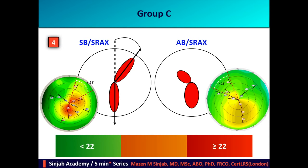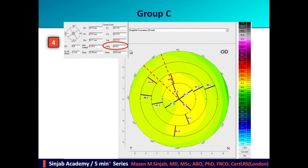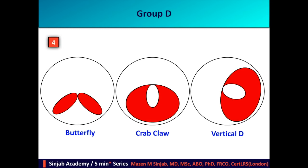Group C is the skewed pattern, consisting of the symmetric bowtie and asymmetric bowtie with skewed radial axis index. If the angle between the inferior and superior segment axes is more than 21 degrees — that is, 22 and above — it is considered a high risk factor. However, this only applies when there is one diopter or more of corneal astigmatism. If there is less than one diopter, such as 0.4, the skewed radial axis index is insignificant.